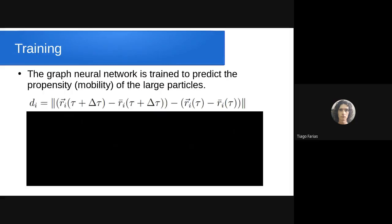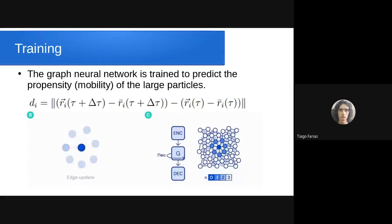To train the neural network, the network is trained to predict the propensity of the large particles. The propensity is the mobility, how much the particles move across time within the system. The equation here shows how you obtain the propensity: it's the norm between the mobilities of each particle, so r corresponds to the position of the particles inside the cube.